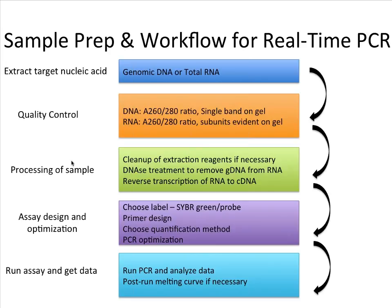The processing of the sample will be very different from one field of research to the other. But generally speaking, processing could involve things like cleaning up extraction reagents if necessary. Nowadays there's a kit for everything it seems, but if you are trying to isolate nucleic acids from a biopsy or brain tissue then you may need to use organic solvents. These organic solvents can be tricky in downstream reactions, so you might want to get rid of those — again, you can buy cleanup kits to do that.